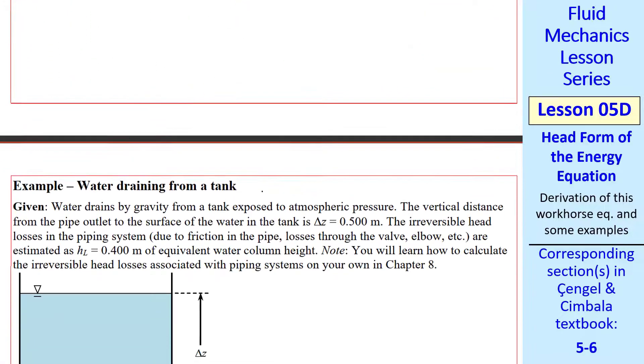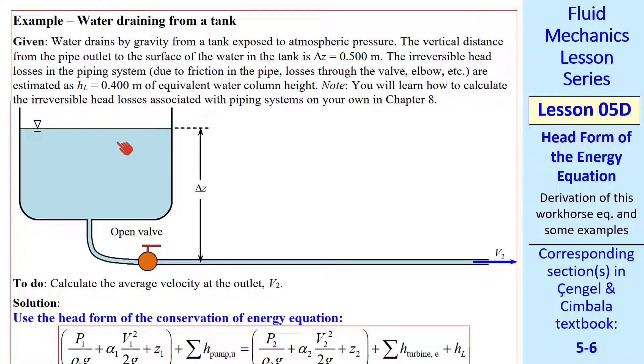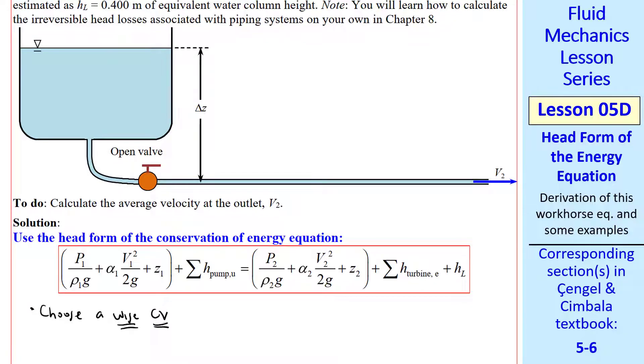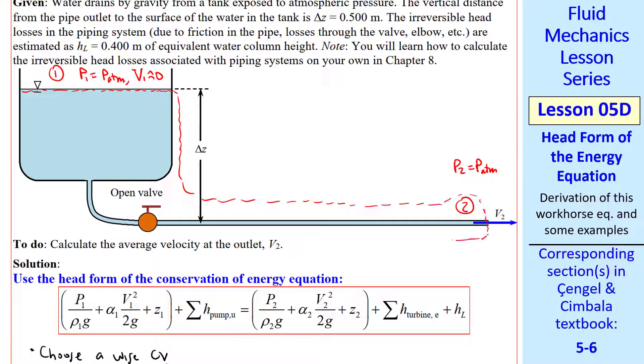I'll do another example. This one has water draining from a tank. Water drains by gravity from a tank that's exposed to atmospheric pressure. We have a vertical elevation change delta Z, a valve, and a long pipe. Again we give the irreversible head losses, but later on you'll be able to calculate this yourself. We want to calculate the average speed at the outlet. Again we use the head form of the conservation of energy equation. But the first step is to choose a wise control volume. Instead of putting the inlet 1 at this pipe inlet, let's put it up here for the same reasons as the previous problem. Namely P1 is approximately P atmosphere and V1 is approximately zero. Also similar to the previous problem, P2 is P atmosphere. So a wise control volume cuts through the surface of the tank, through the exit, or outlet, around the valve, and then closing again at the surface.